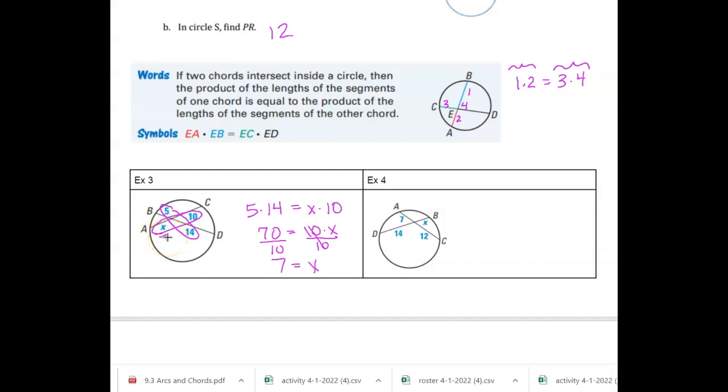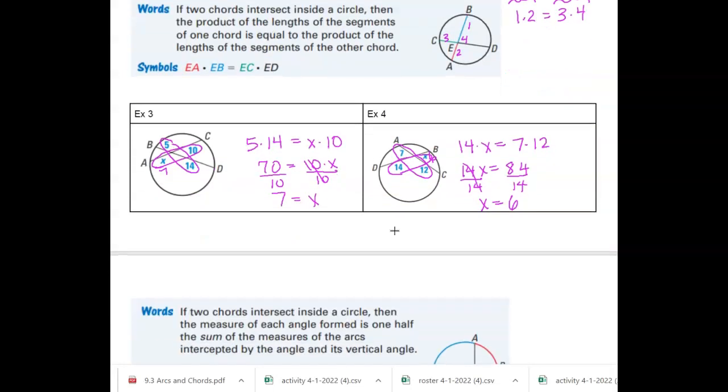On my next example, same idea. It doesn't get much harder than this. So 14 times X equals 7 times 12. I could even divide now, but I'll go ahead and multiply. 14X equals, what's that? 4, 8, 84. So divide by 14. And so X equals 6. Now, this might ask you for the length of the total chord. It really just depends, but you would read the directions. Okay.